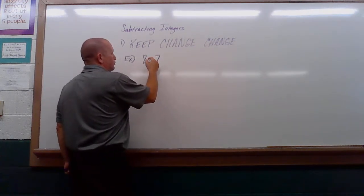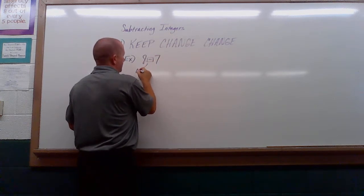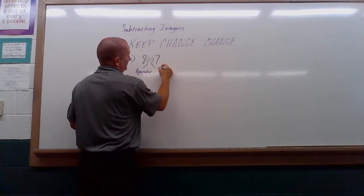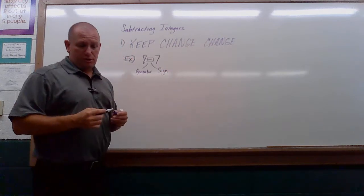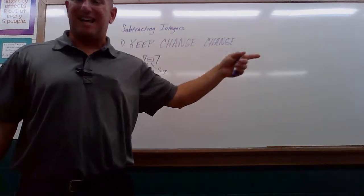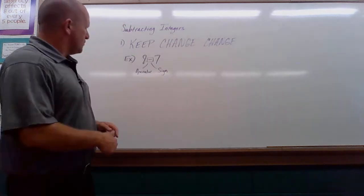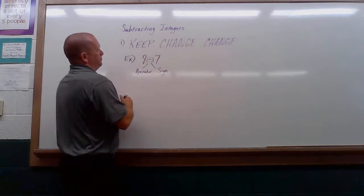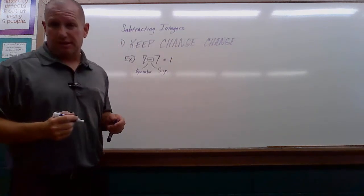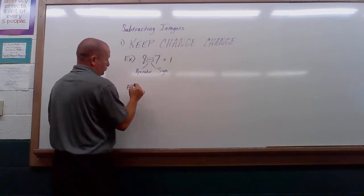This is where I want you to start realizing that a minus sign can act as both an operator and as the sign of the number. So in this basic case we'd just go ahead and do 8 minus 7 and get our answer. That's just a regular subtraction problem.